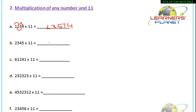Let's take another example: 2345 into 11. Write 5 as it is. Then 4 plus 5 is 9. 3 plus 4 is 7. 2 plus 3 is 5. And 2 as it is. So the answer of 2345 into 11 is 25795.